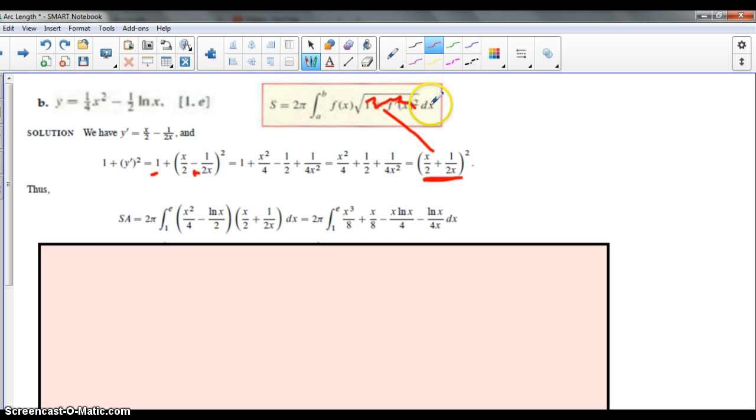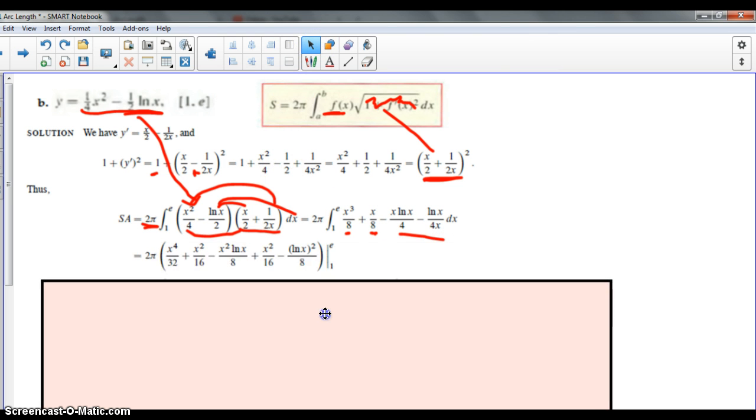That is how I write this term, f of x itself. That is where that term came from. And then we have our 2 pi and our bounds. It becomes necessary at this point to expand this using foiling. You do the first terms x over 4 times x over 2, that is where this term came from. x over 4 times 1 over 2x, that is where this term comes from. And then you will do the inner and the last. That is where these two terms will come from.